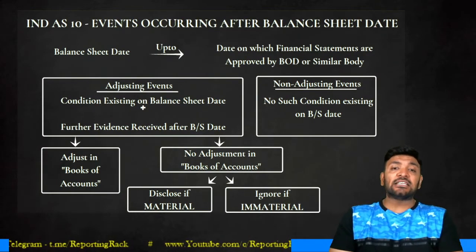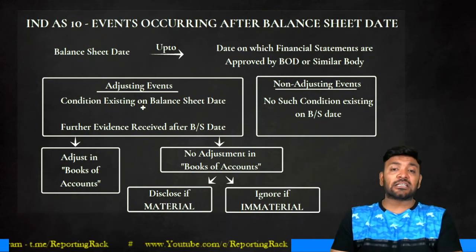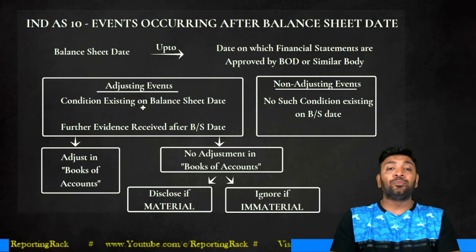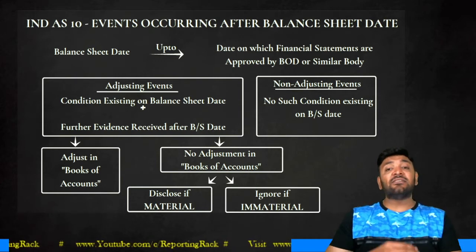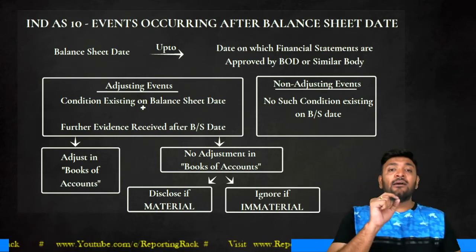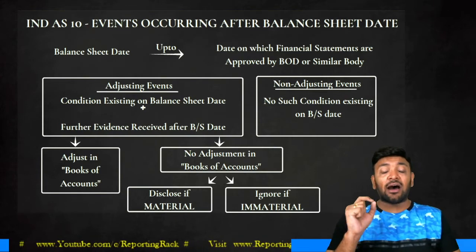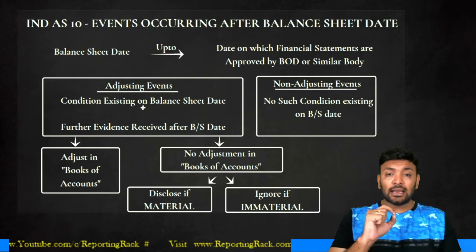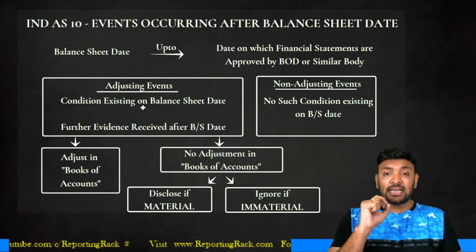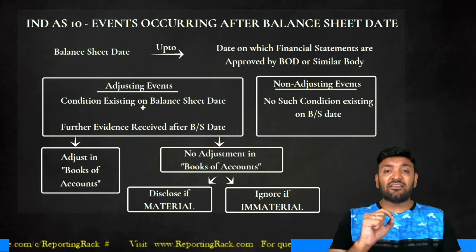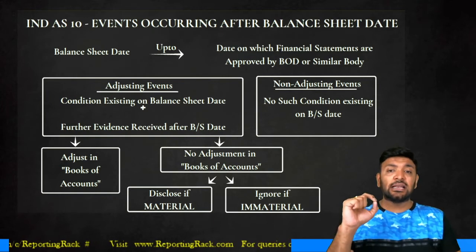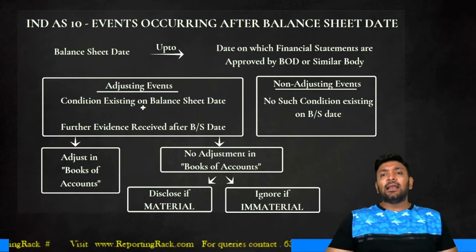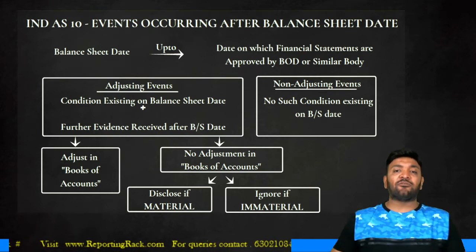From the balance sheet date up to the date on which the financial statements are adopted or approved by the board of directors, an adjusting event is one where a condition is existing on the balance sheet date and further evidence is received after the balance sheet date. A non-adjusting event is one where no such condition is existing on the balance sheet date.